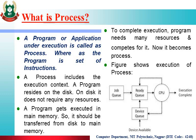Here one important thing to remember: the operating system executes more than one process at the same time, but the CPU executes only one process at the same time. The main role of the operating system is to select a particular process from the ready queue and send it to the CPU for execution.